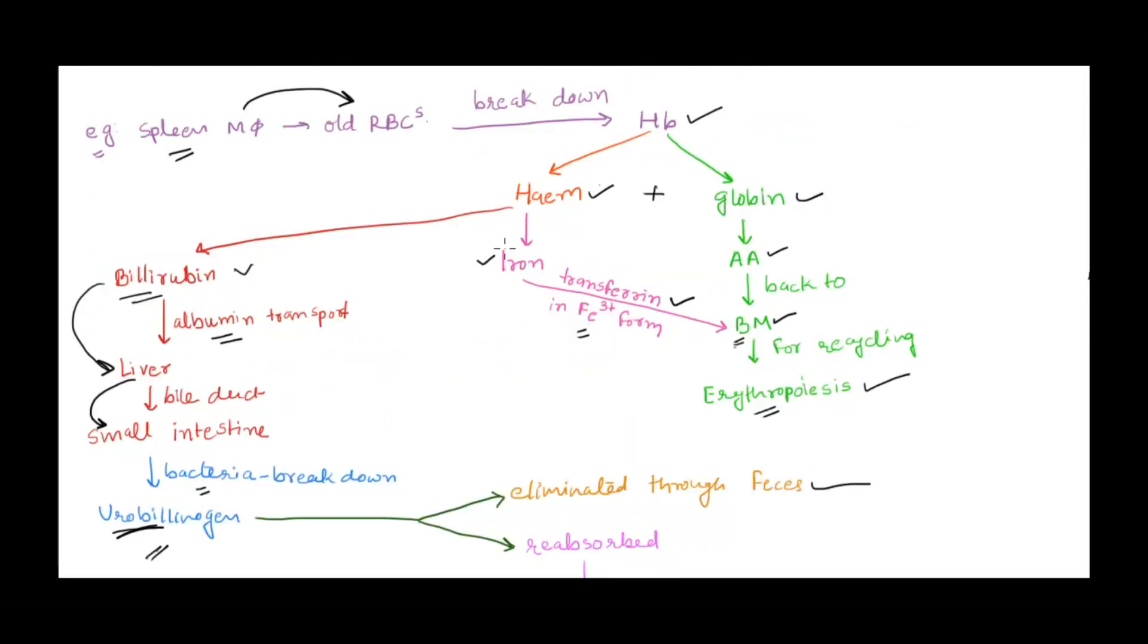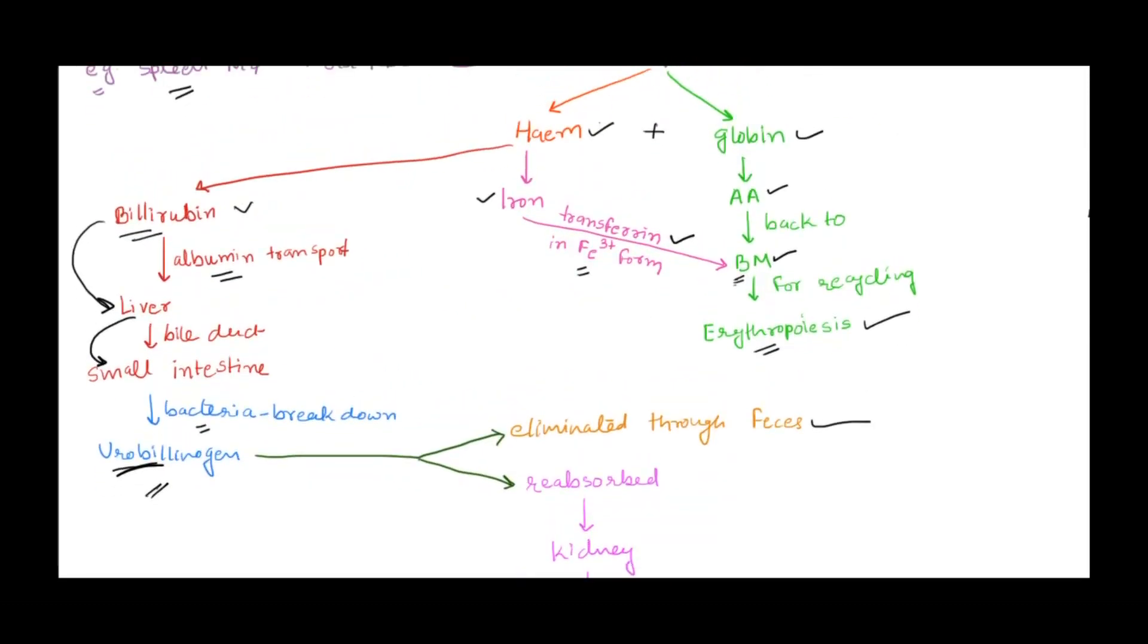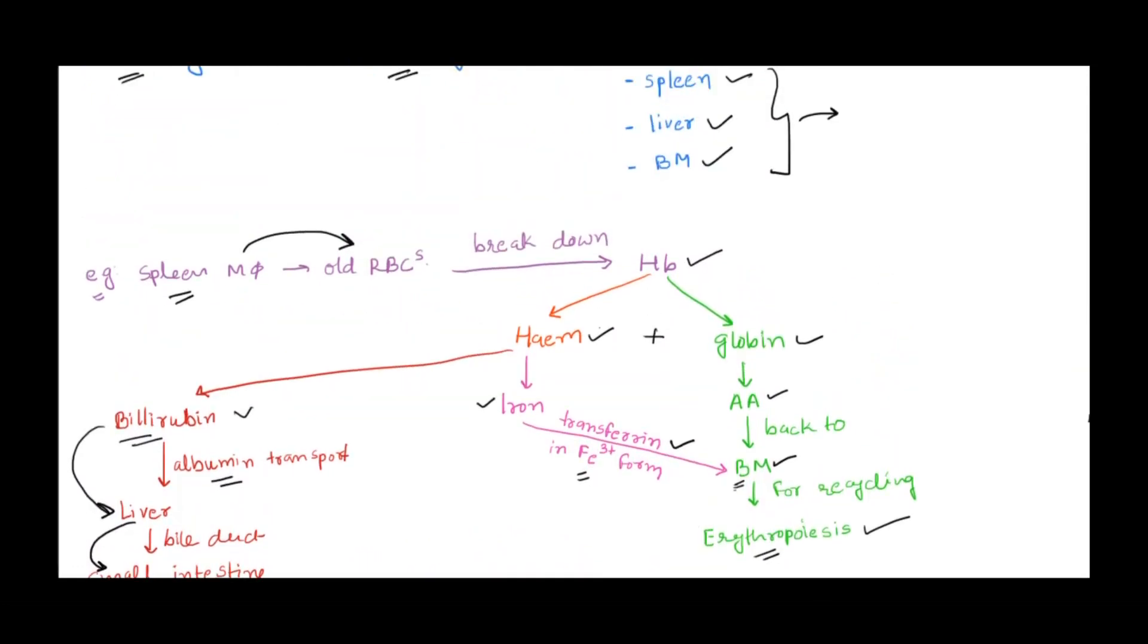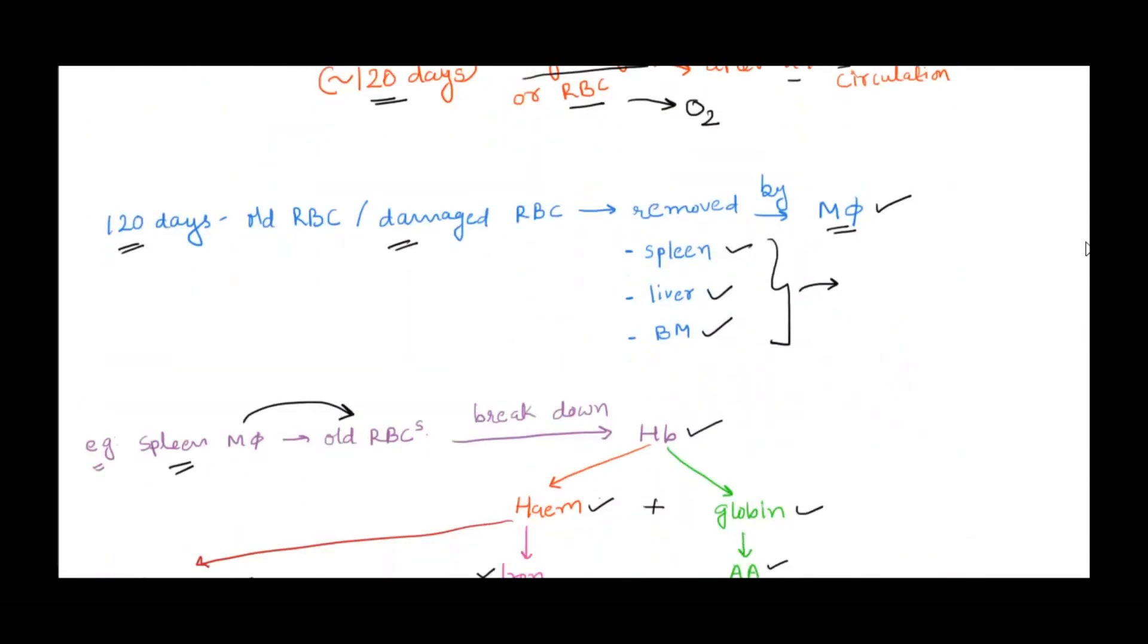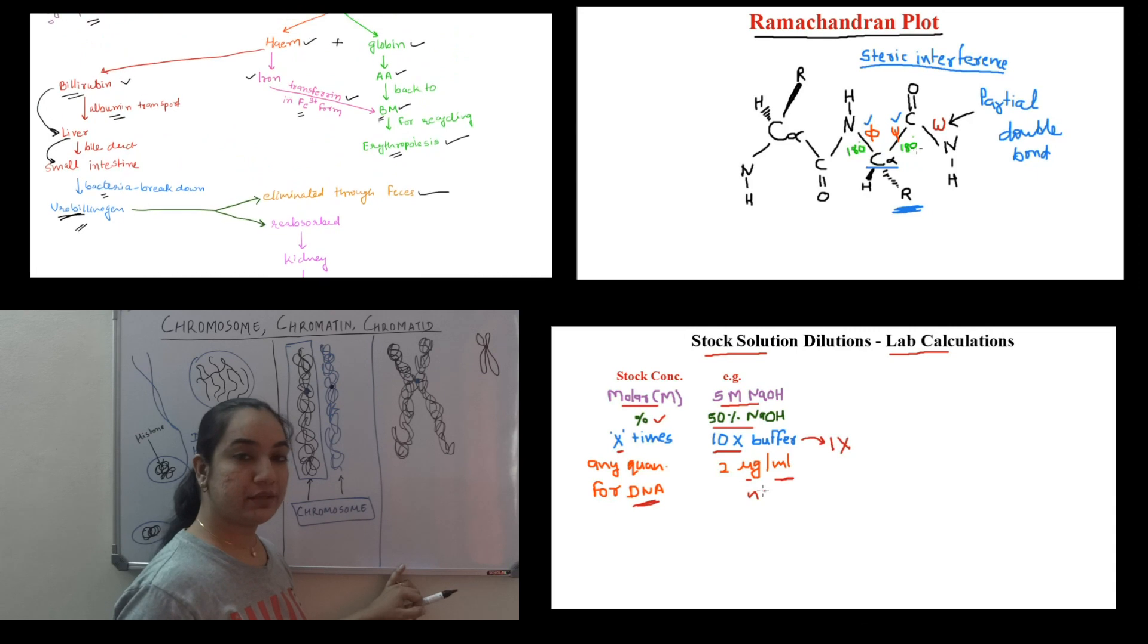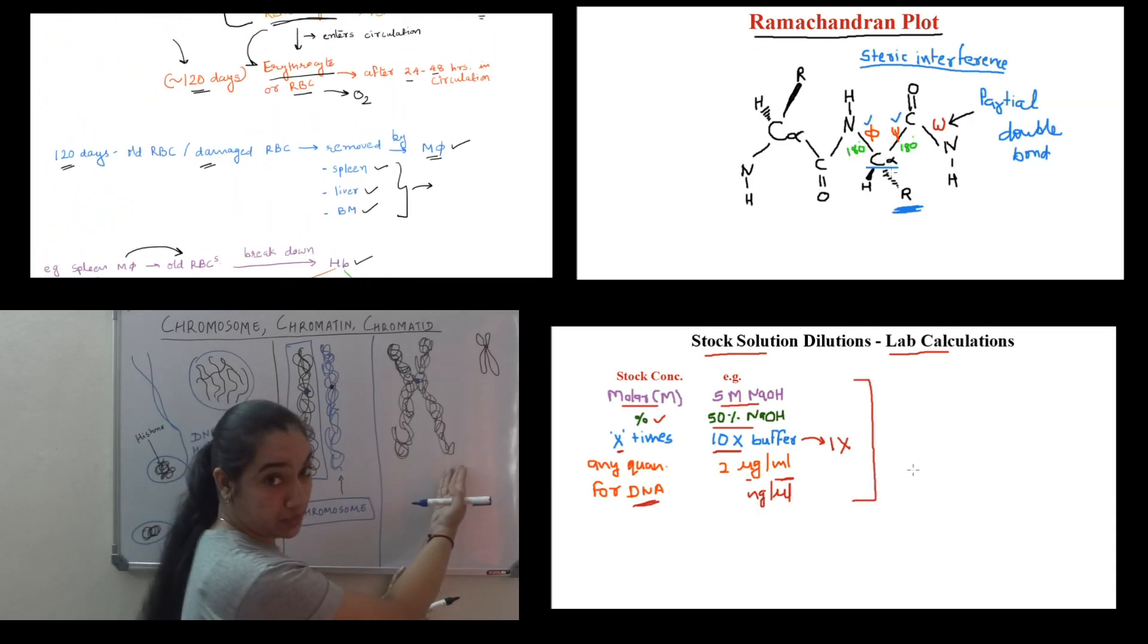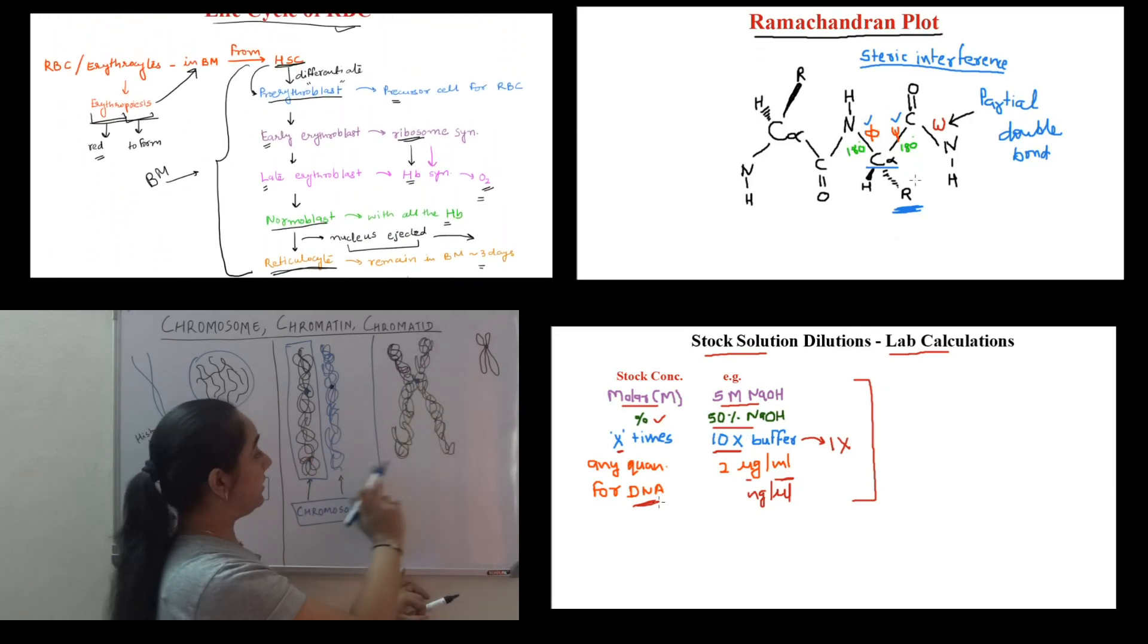At first sight it might look a little difficult to understand, but it's actually very easy - what happens to each component. That's all. That's how RBC is formed, how RBC is destructed, and most of its components are recycled. I hope this video was helpful. Do subscribe to the channel for new videos every week. I'll see you next time. Until then, keep learning.